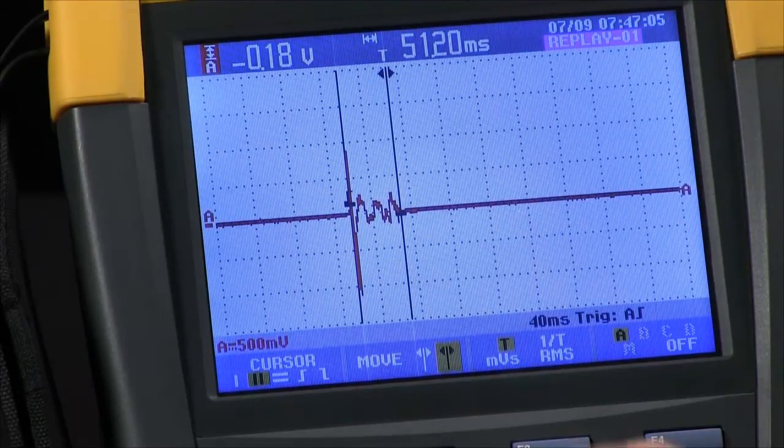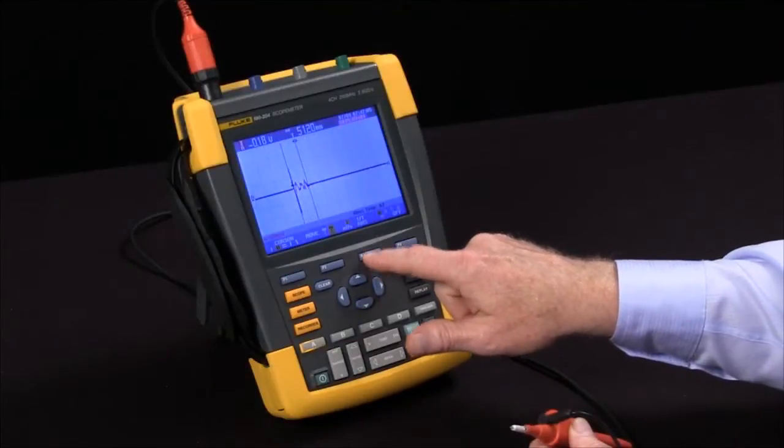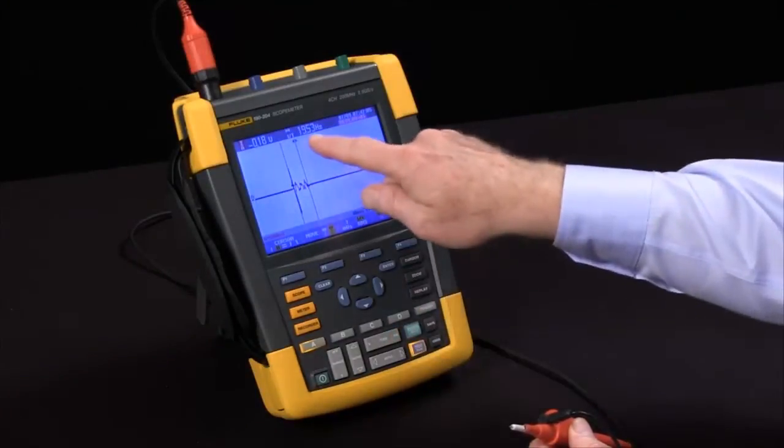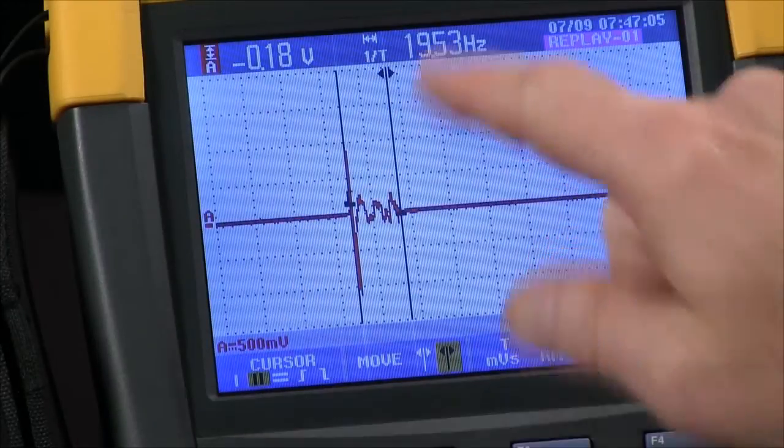If I wanted to know the frequency I could press the F3 key to toggle from time to one over time and actually see the frequency at 19.53 hertz.